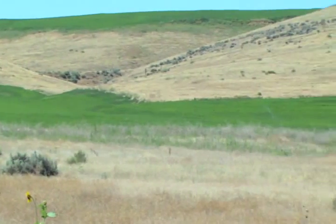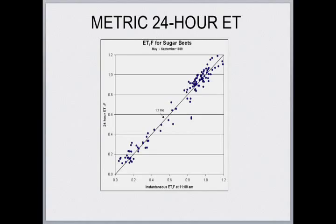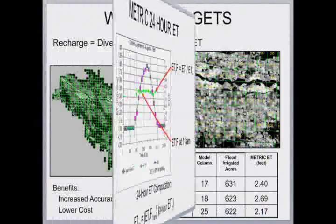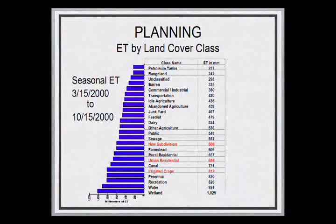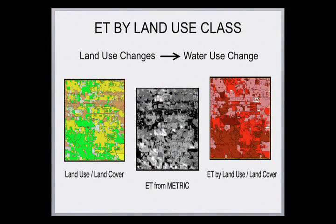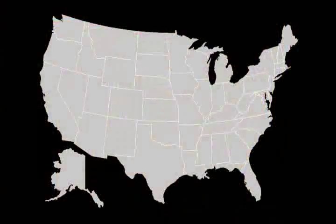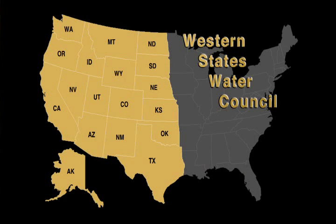Mark Twain observed that whiskey is for drinking and water is for fighting over. Many of Idaho's water rights are tied to the actual consumption of water — not necessarily the amount of liquid water applied to a field, but the amount consumed into evaporation. The beauty of Landsat is that it's public data. We process everybody using one set of data, and everyone has access to the same data. This is a complete change from the past when everybody squabbled over their own data. An agreement on data and on the modeling goes a long way to resolve issues. Once people have a common base of knowledge, it's much easier to negotiate a solution.